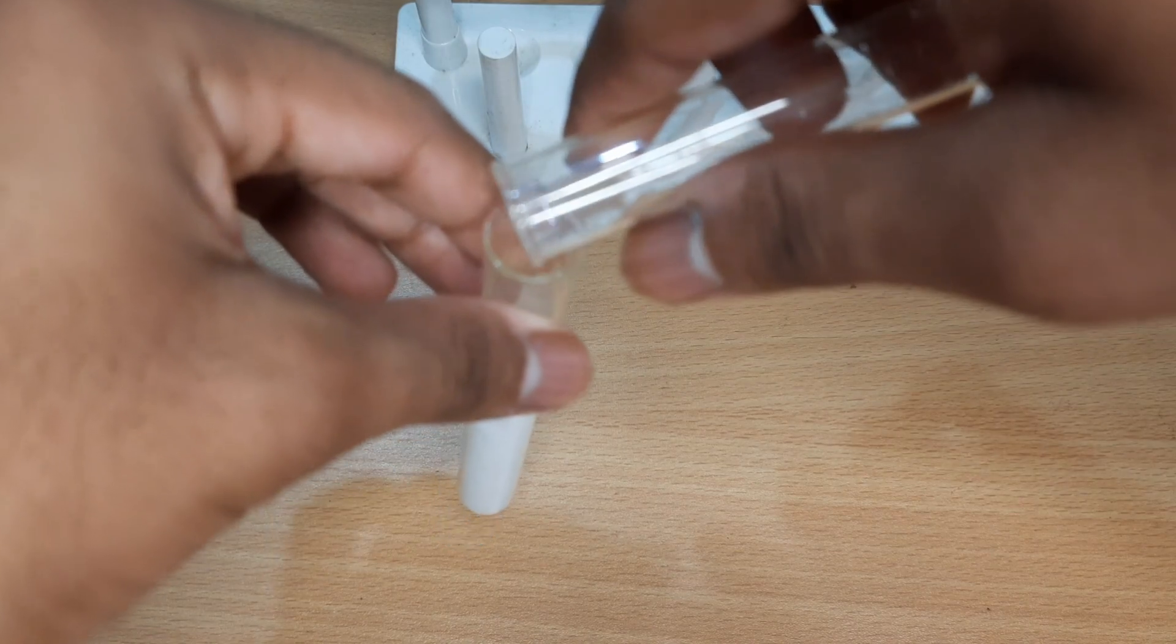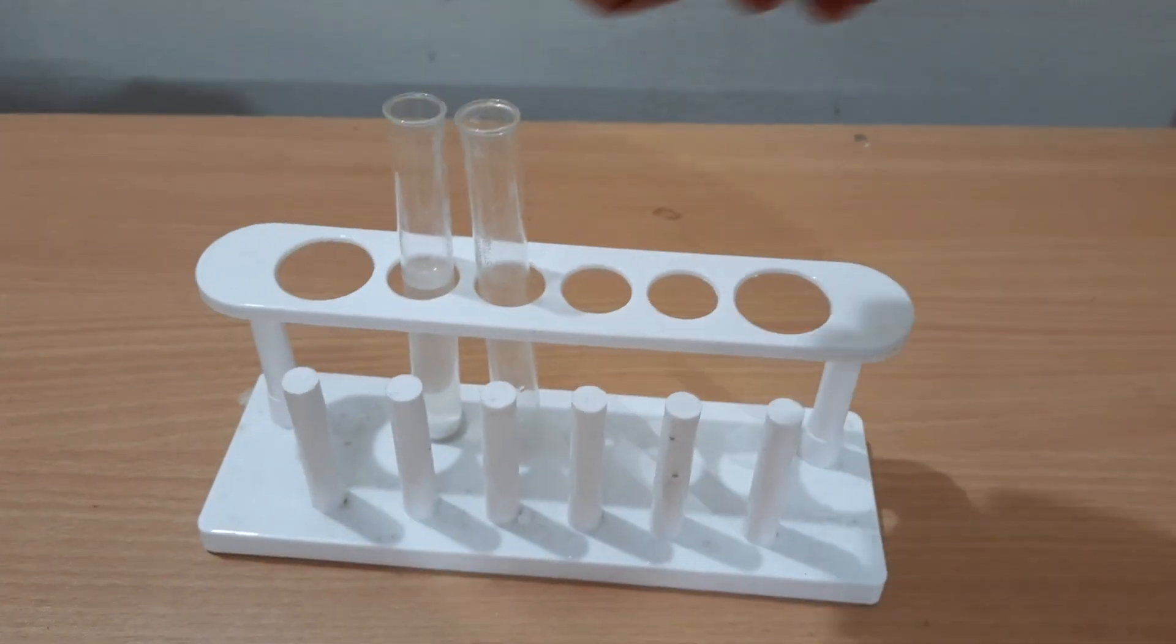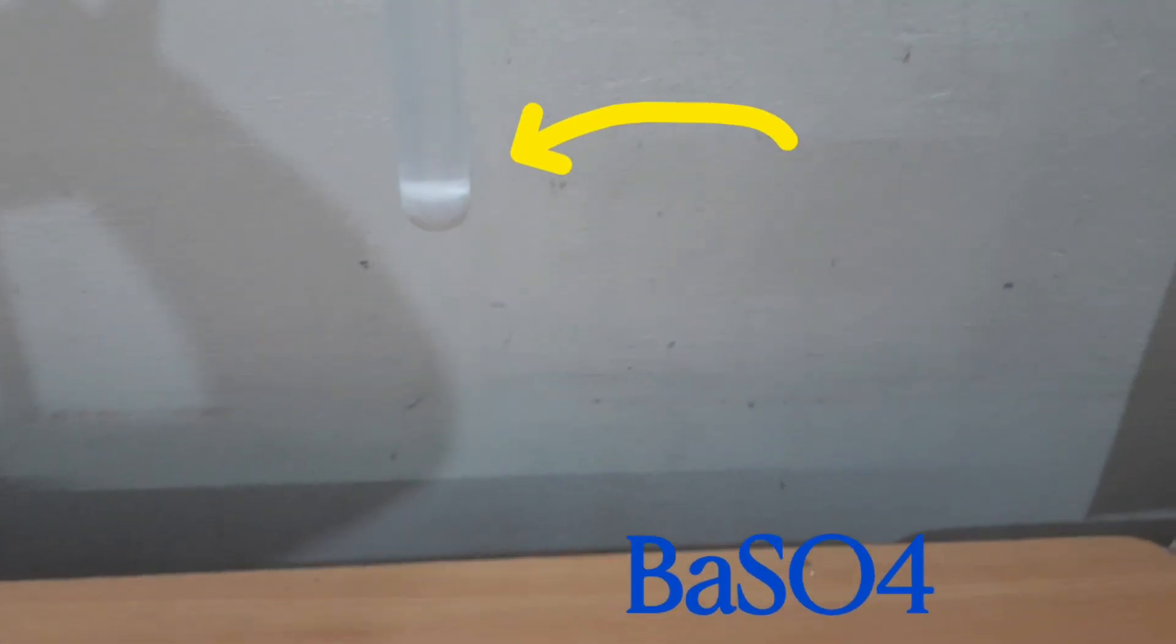Barium ions of barium chloride react with sulfate ions of sodium sulfate to form barium sulfate. A few minutes later, the barium sulfate is formed as a white insoluble solid.